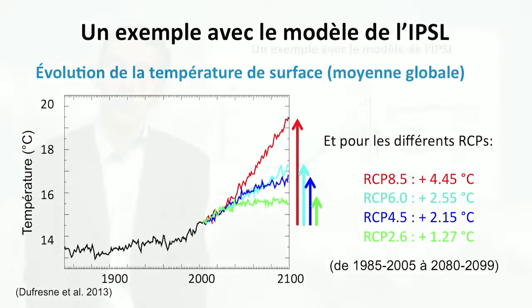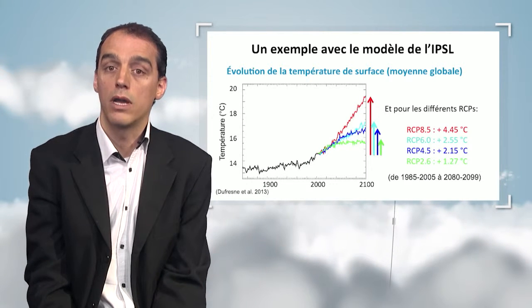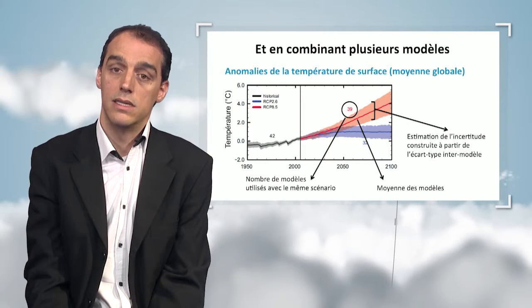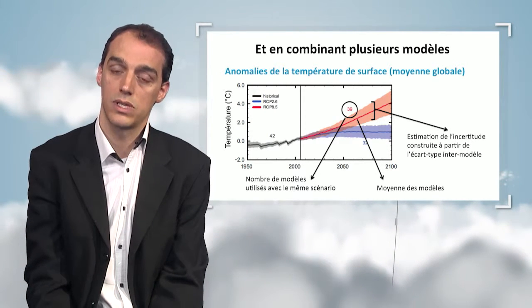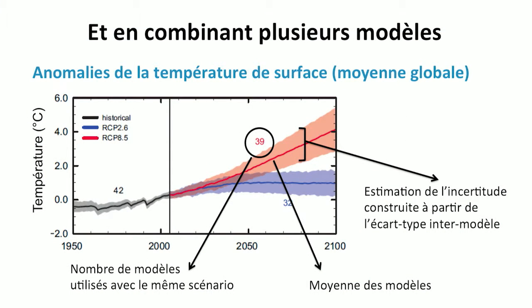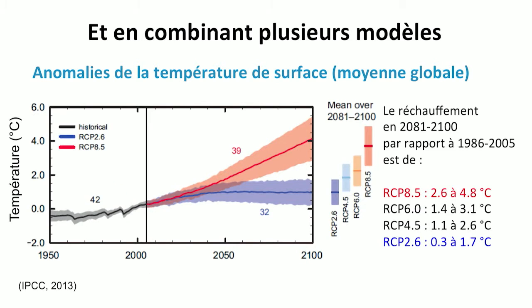The results shown here were established with a single climatic model. The international community develops about 40 climatic models, and all the results were combined in the last IPCC report. You can see a summary here: the projection of surface temperature anomalies for approximately 40 different models for the same two scenarios — RCP 8.5 at the top and RCP 2.6 at the bottom. In order to use all models, scientists calculate the average of all the projections — the area contained in both the red and blue regions. Around the curve, there is a representation of the spread between the models, representing the uncertainty regarding temperature projection for the next decade.